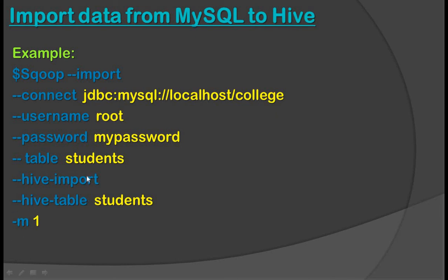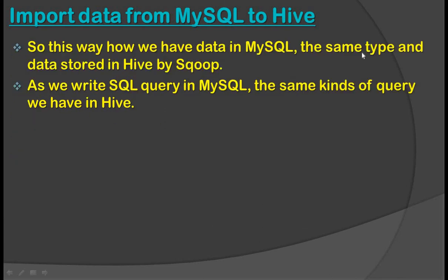When Sqoop executes this statement, it imports the student table records to the Hive student table — that is, from the RDBMS student table to the Hive student table. It is very simple to store data from RDBMS to Hive; we only need to add these two keywords.